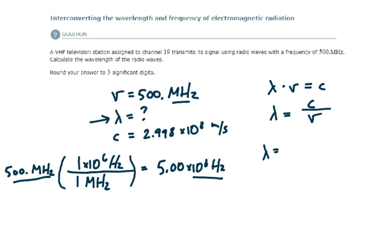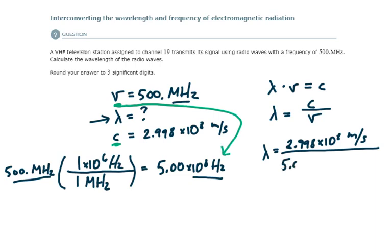Wavelength is equal to c, which is 2.998 times 10 to the 8, with units of meters per second. I divide that by the frequency that we have converted to hertz, so I divide by 5.00 times 10 to the 8. Hertz is equal to inverse seconds, or s to the minus 1.